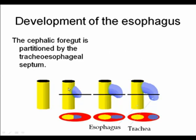The foregut is developing with the gut tube shown in yellow. The respiratory diverticulum forms, and it is important that there are no communications between the respiratory diverticulum and the foregut — that is, the future esophagus. This is relevant to the development of tracheoesophageal fistula.